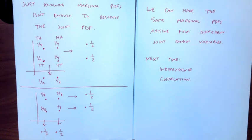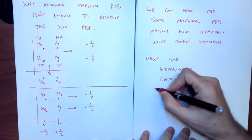Next time we'll talk about independence and correlation — concepts that expose how two random variables are related. In real-world analysis, we often try to predict one variable from another, so understanding their correlation matters greatly. If things are well correlated, knowing X gives good predictive power about Y. If poorly correlated, knowing X tells you nothing about Y.